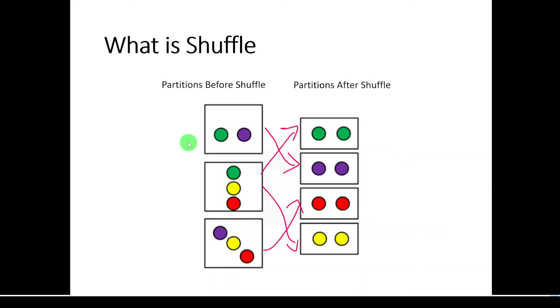In this example, we can clearly see that if you have to calculate the number of balls per color, we have to sort the data, we have to bring the same color balls into one executor before performing the calculation. So this is how shuffle happens across executors.